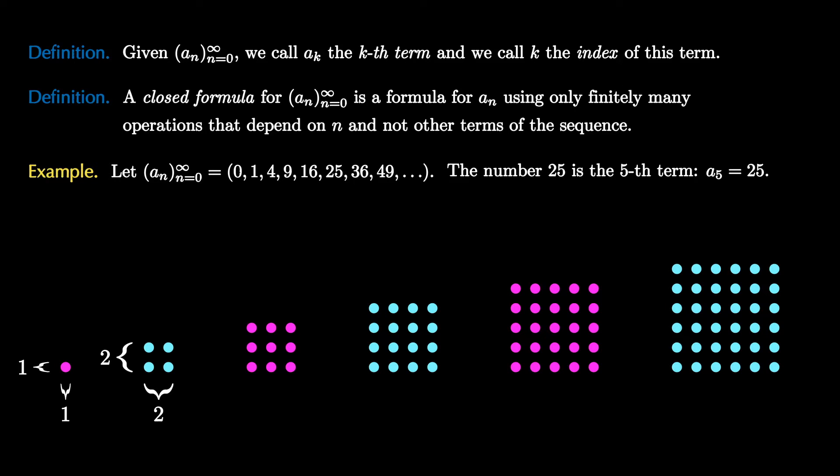The first one is in a 1 by 1 array. The number 4 is in a 2 by 2 array. The number 9 is the number of dots in a 3 by 3 array. The number 16 is the number of dots in a 4 by 4 array. The number 25 is the number of dots in a 5 by 5 array. The number 36 is the number of dots in a 6 by 6 array. This pattern continues.